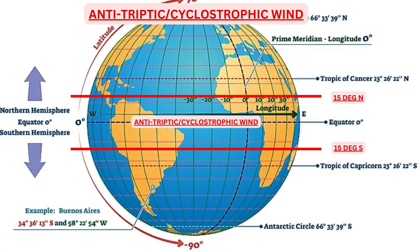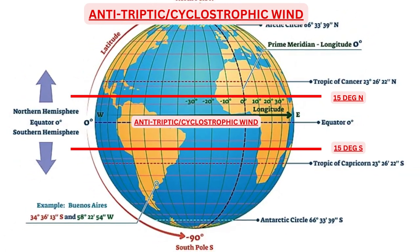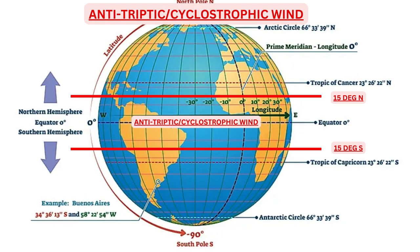Anti-triptych wind or cyclostrophic wind: for both geostrophic and gradient wind to be modeled, the presence of Coriolis force is mandatory. So what about the winds in geographical areas within plus or minus 15 degrees latitude from the equator, where Coriolis force is close to zero? Winds within plus or minus 15 degrees latitude from the equator where Coriolis force is negligible are called anti-triptych wind or cyclostrophic wind.